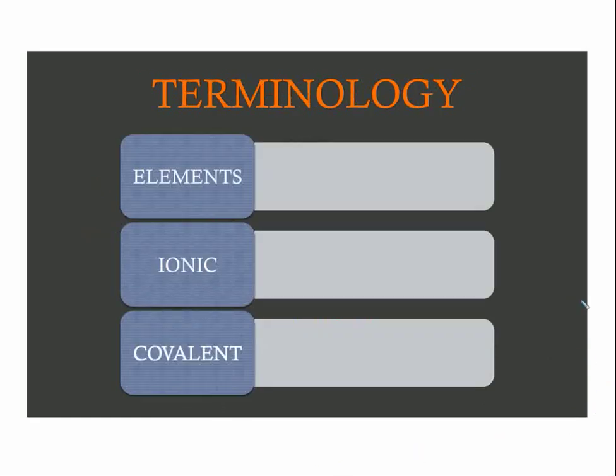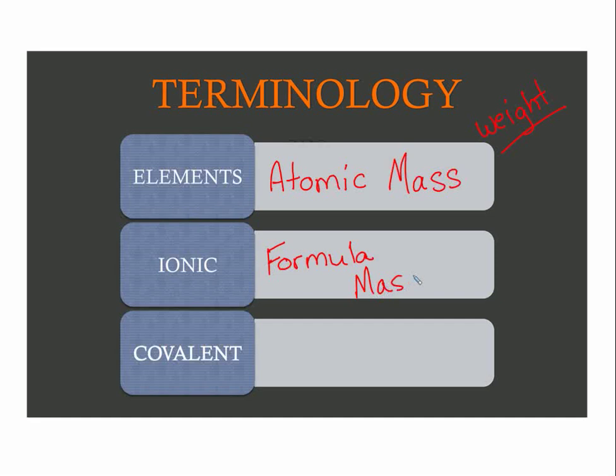When we're doing this, there is some terminology we want to be dealing with. For elements, we're going to be using atomic mass. You may see weight instead of mass in older pages or worksheets, but it's more common to call that atomic mass. If it is ionic, we have formula units with lowest whole number ratios, so we talk about a formula mass. And for covalent, we have molecular mass.